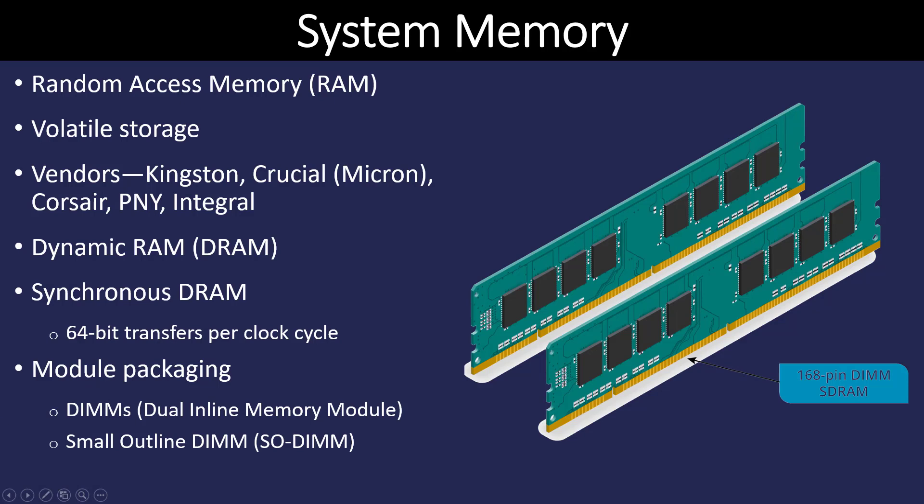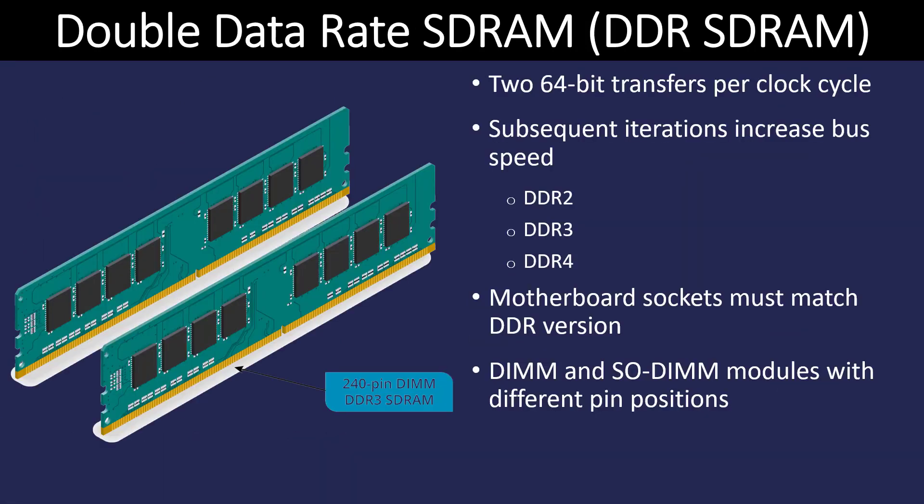Let's begin with looking at system memory. RAM, like most computer components, has continually been upgraded over the years. The current versions are DDR4. DDR stands for Double Rate Dynamic RAM. The first set of RAM was able to transfer once per clock cycle, then we had DDR2, which can transfer two times per clock cycle, and then we have DDR3 three times and DDR4 four times.